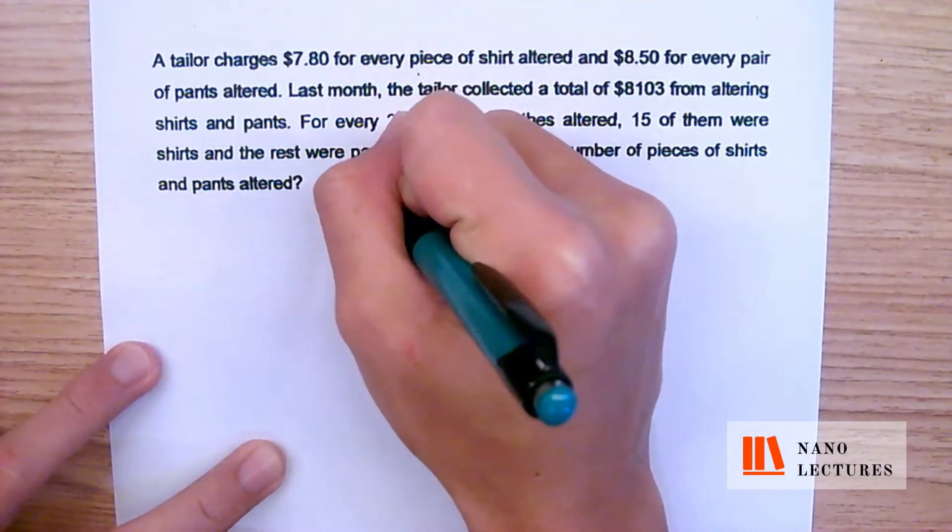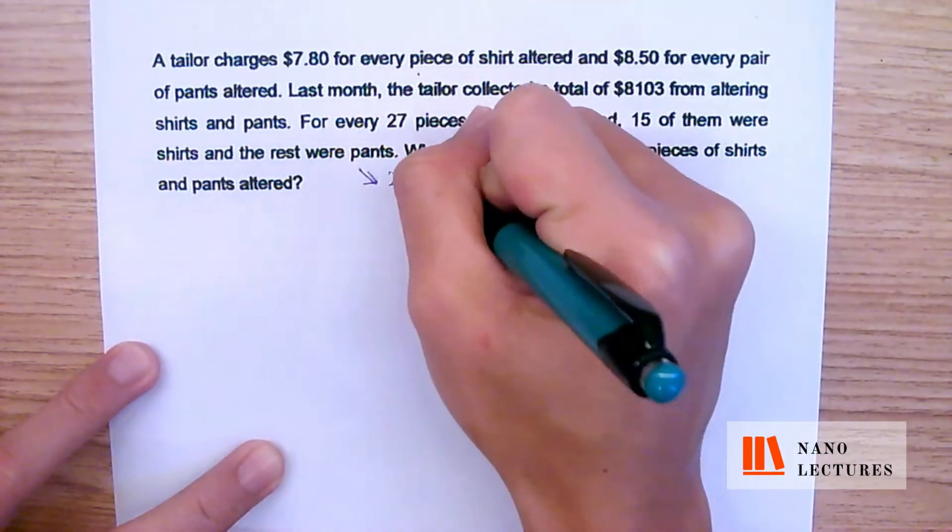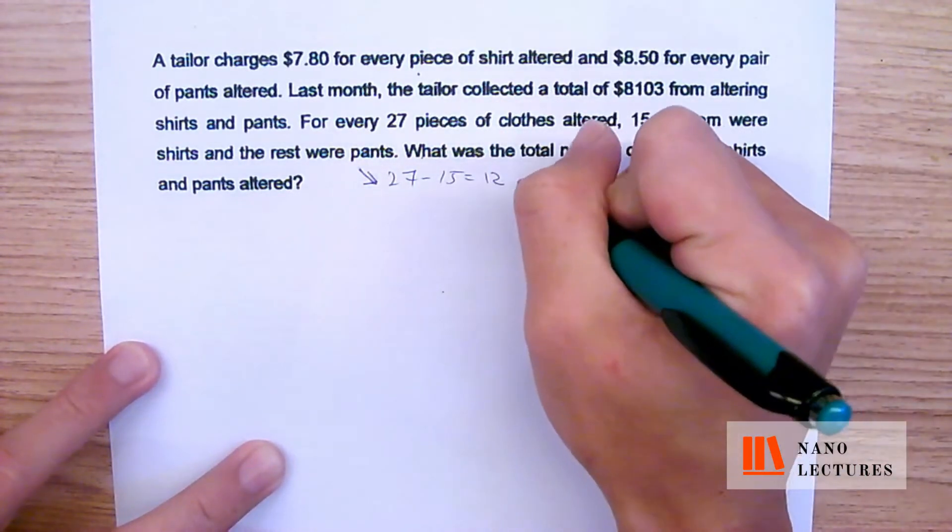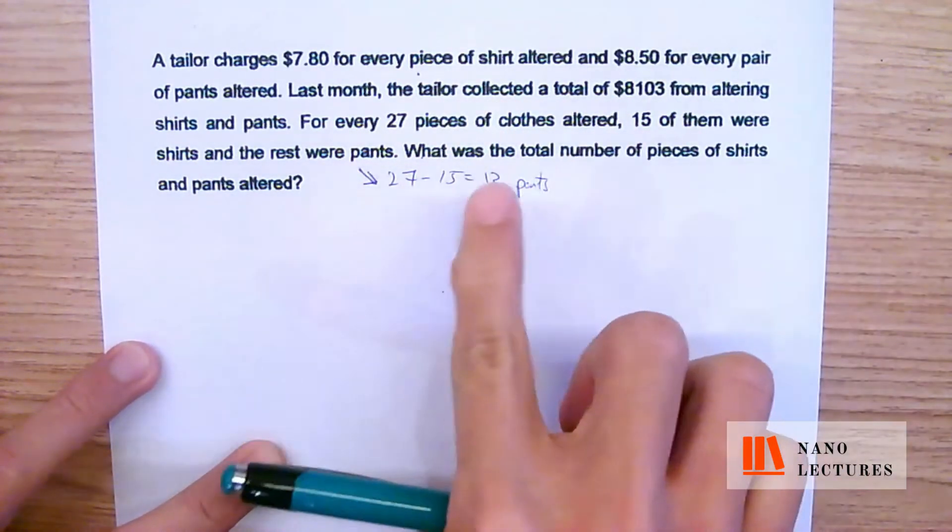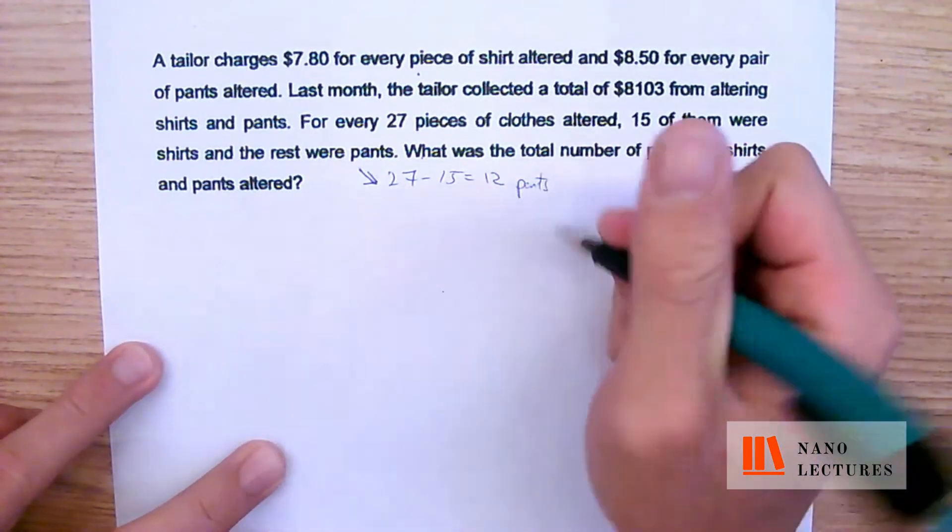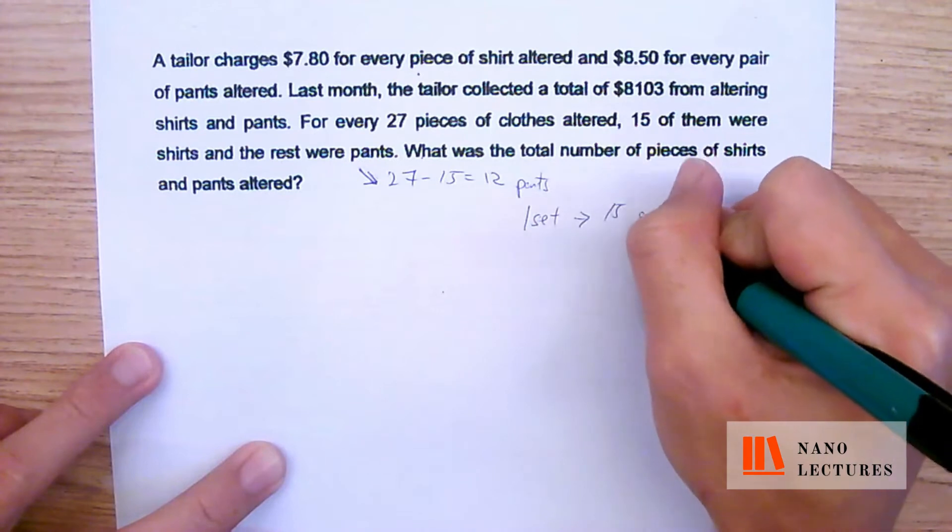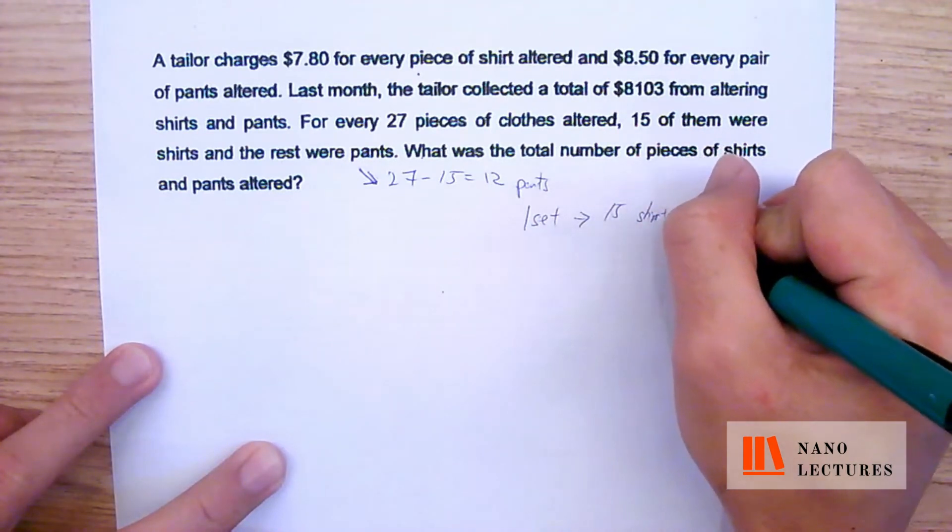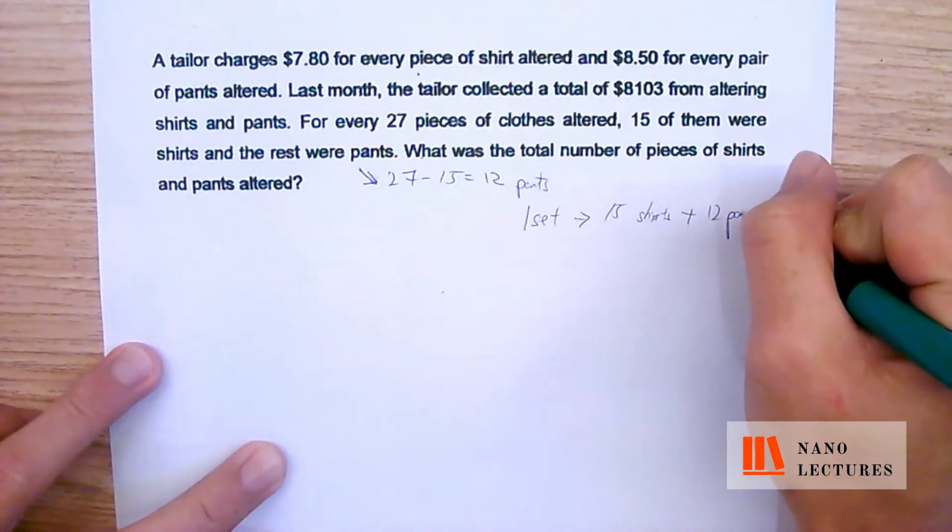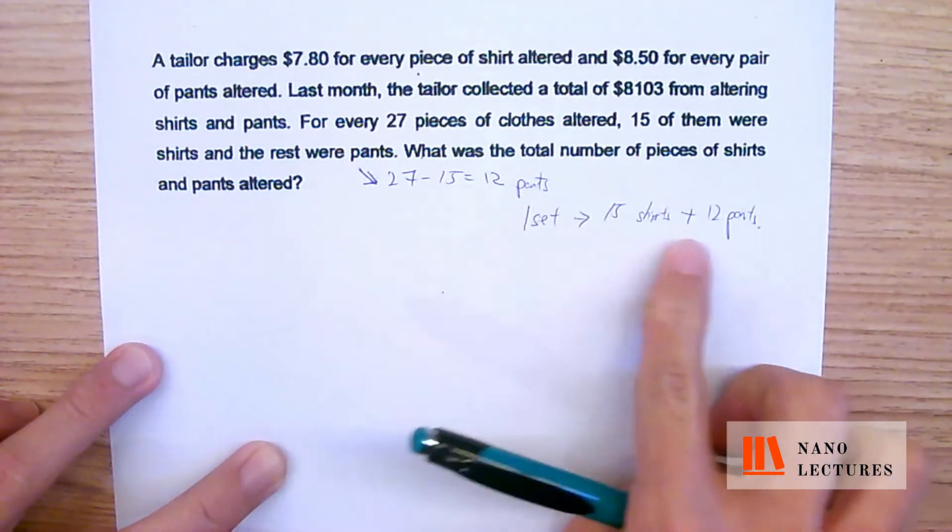So this one is 27 minus 15, that will give us 12. Do you see that this one is 1 set? So 1 set would be 15 shirts and 12 pants. We have to find out this set first.